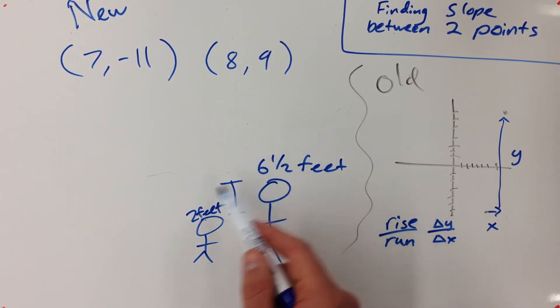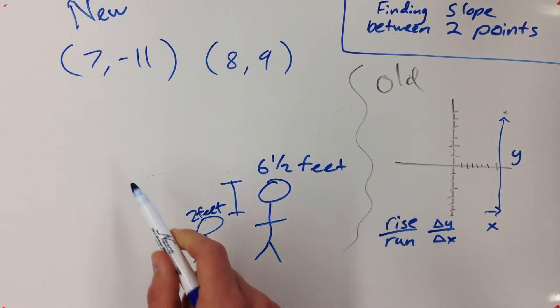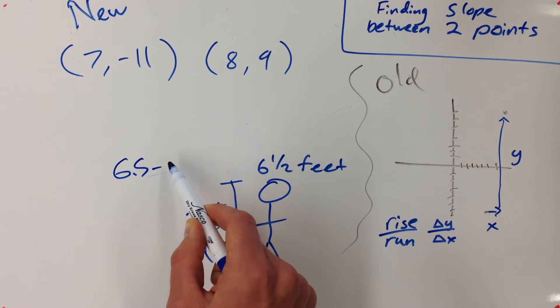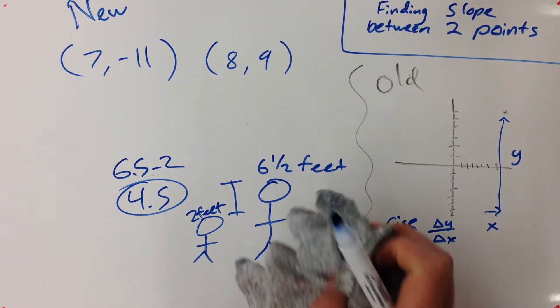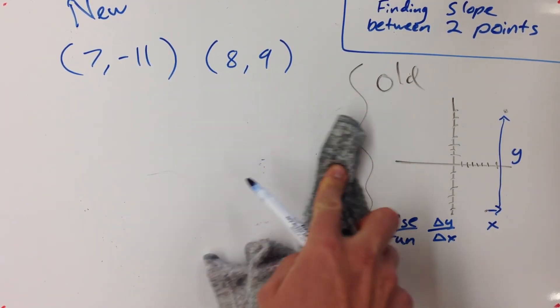You have to subtract the now by what the past was. So six and a half minus two, yeah, I've grown four and a half feet. We're going to do the same thing. We're going to subtract our y's to figure out the change. So here's the formula.